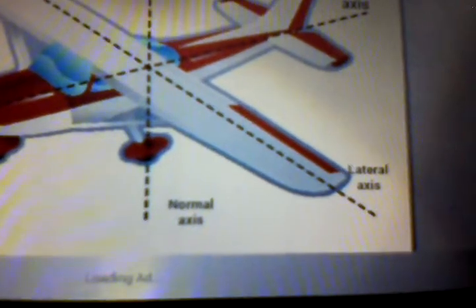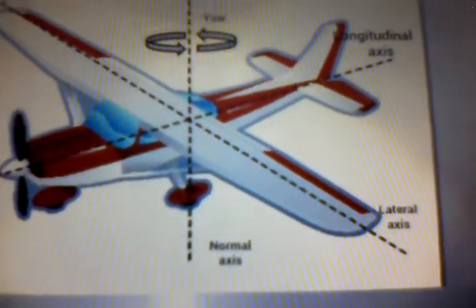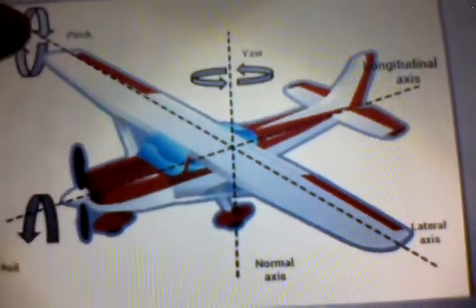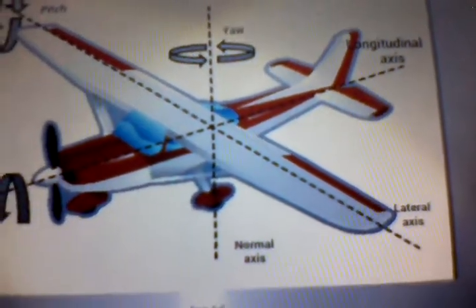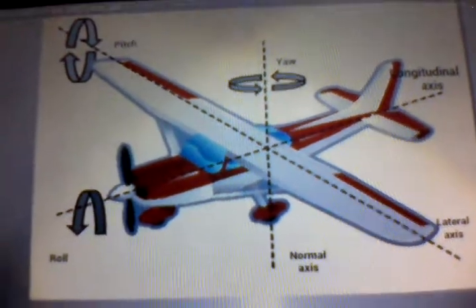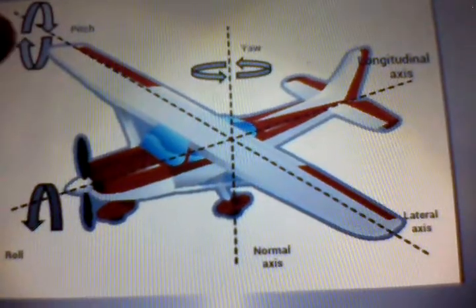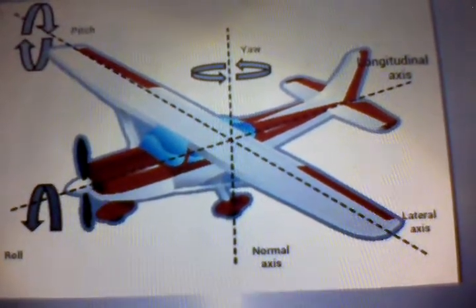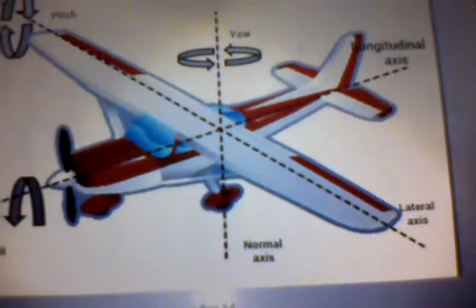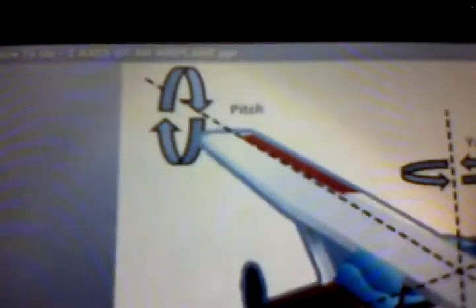Now you have the lateral axis. The lateral axis is running from the wing tip — the tip is actually at the end of the wing, the outside end — to the next wing tip on the other side. So from wing tip to wing tip. The lateral axis is running from wing tip to wing tip of the airplane, going through the center of gravity, and the movement around it is pitch.